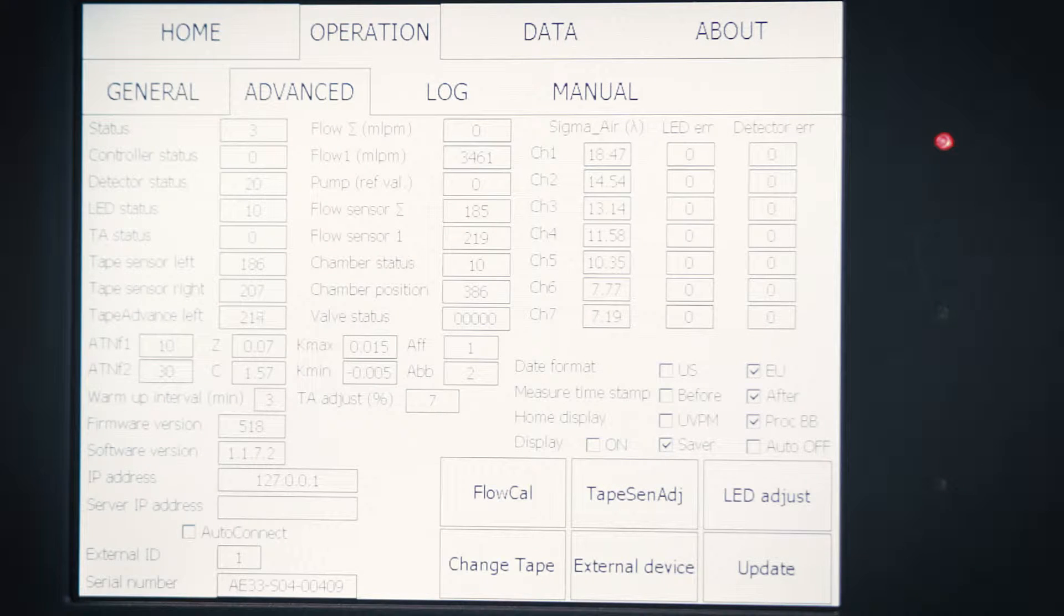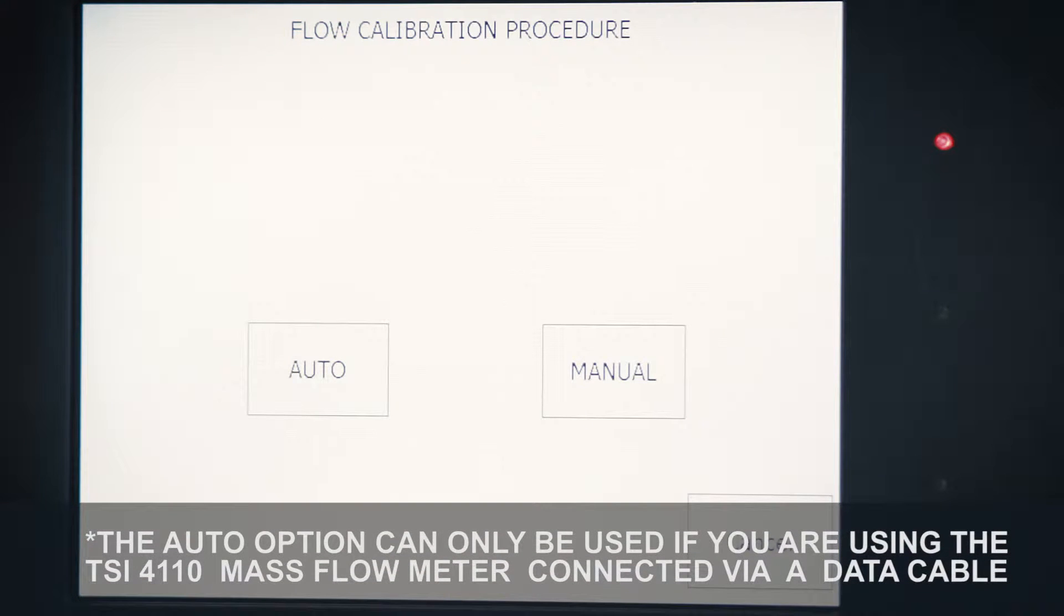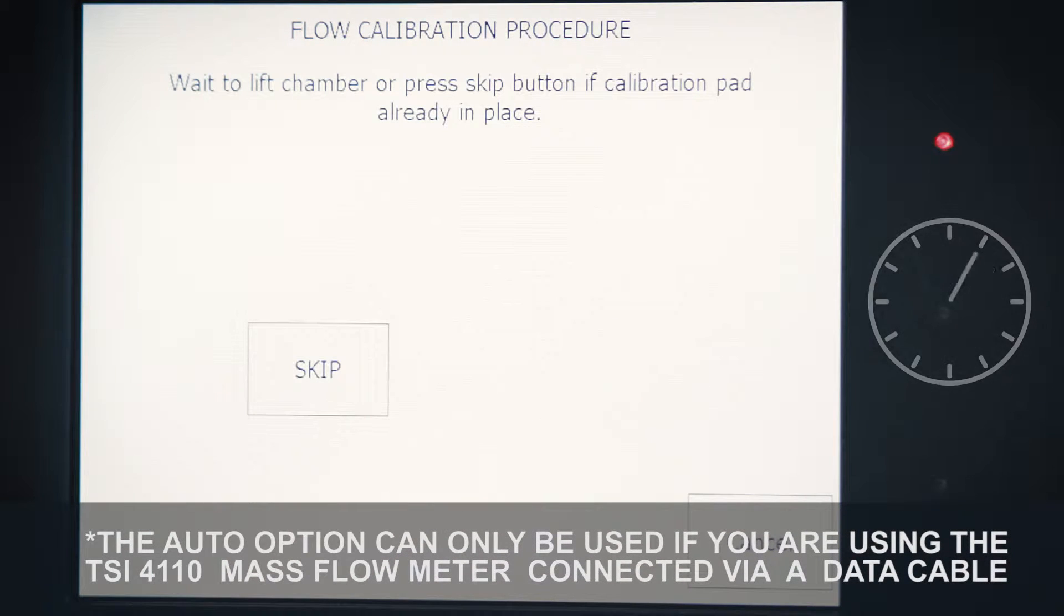Press the flow cal button to start the test. Choose Manual. If the rubber pad is already in place, you can press the Skip button.